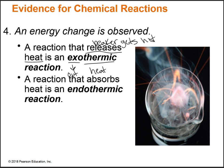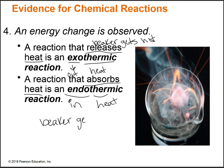The opposite is an endothermic reaction — that's when a reaction absorbs heat. Endo means in, and thermic means heat, so you're bringing heat into the reaction and your beaker gets cold. So those are the four pieces of evidence you can use to support the hypothesis that a chemical reaction is taking place.